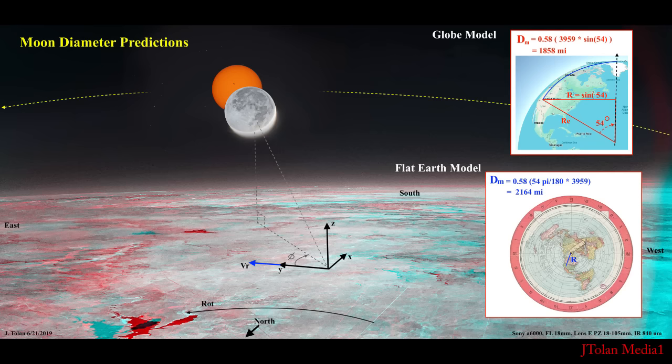And it's very simple to calculate. And then we have 54 degrees, we convert that to radians by multiplying by pi over 180. And then we multiply with the radius. So that gives us the arc length. And then we multiply by that 0.58. And voila, we get 2,164 miles.